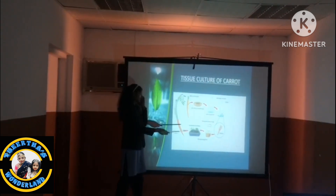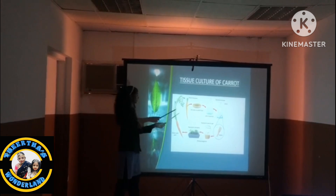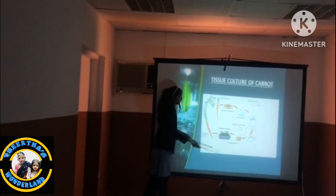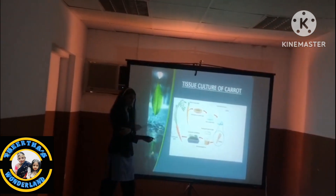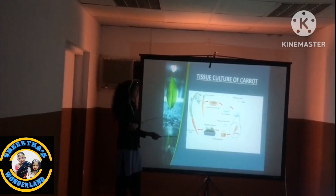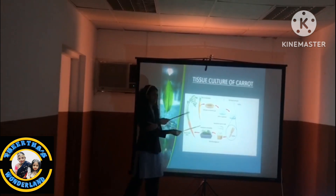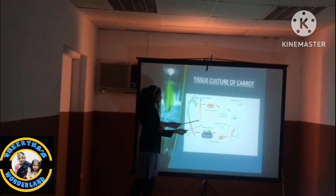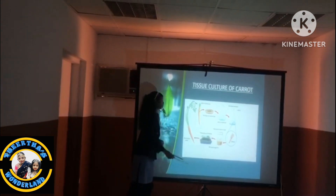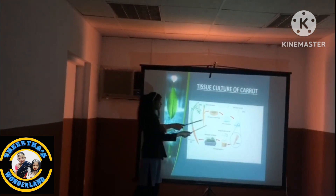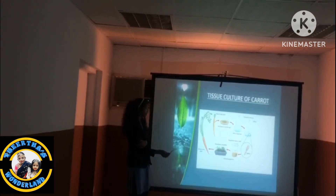This is the tissue culture of carrot. The roots are taken and kept into a nutrient agar where they are transformed into cells. We add micro and macronutrients and growth regulators, and the cell divides and grows. This is known as callus, and it is transferred into a solid agar where young plants grow and eventually develop into a mature carrot plant.